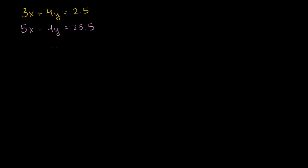It's probably not obvious, even though it's sitting right in front of your face. What if we just added this bottom equation to the top equation? That means adding 5x minus 4y to the left-hand side and adding 25.5 to the right-hand side — literally adding the two equations together.